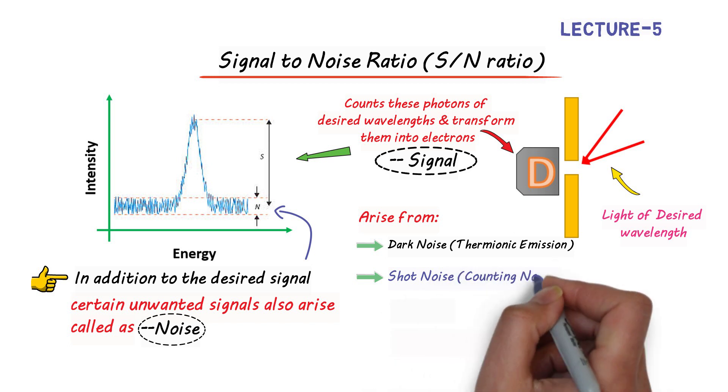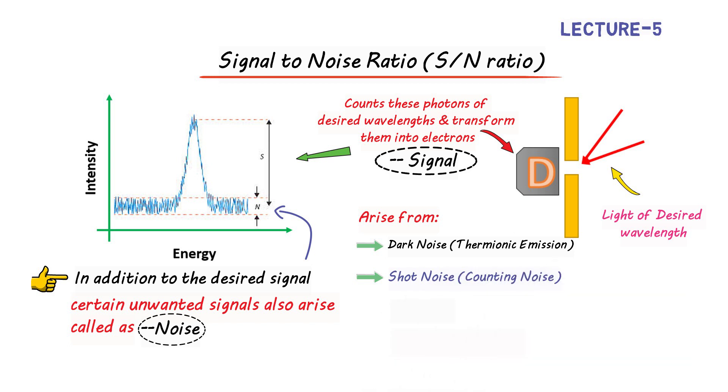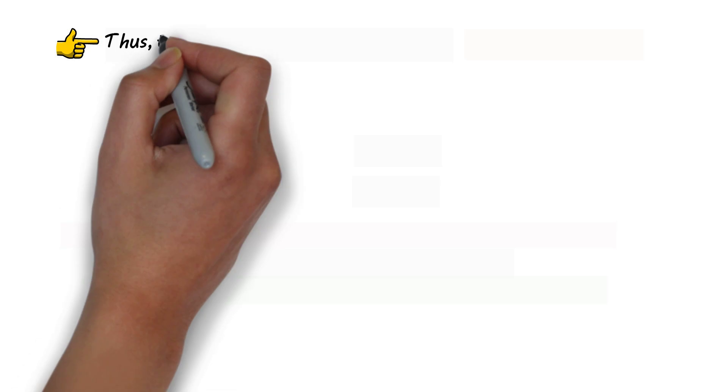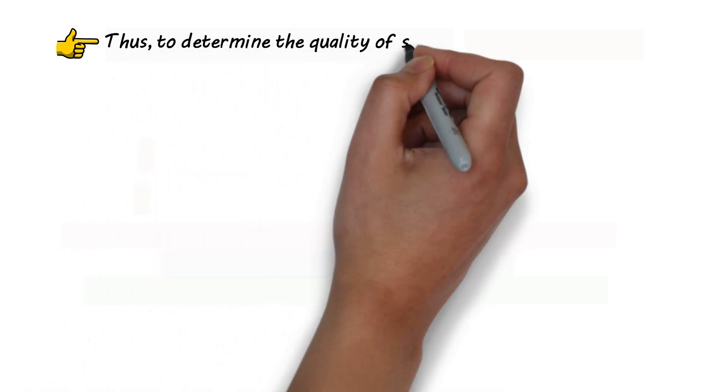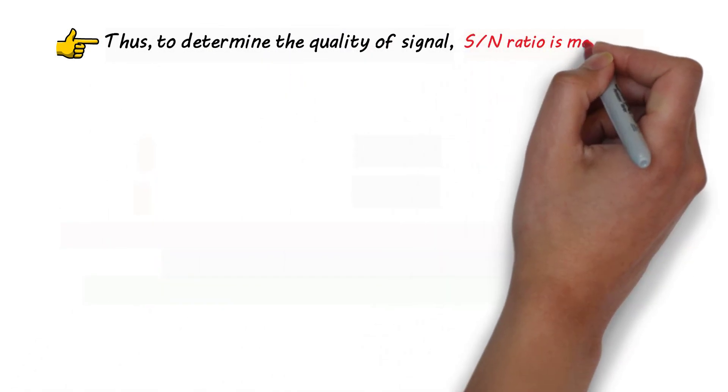Third, noise can also arise from stray light passing onto the detector. And finally, we can have instrumental errors that result in noise formation. Thus, to determine a good quality signal, signal to noise ratio is measured.